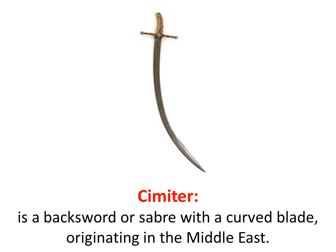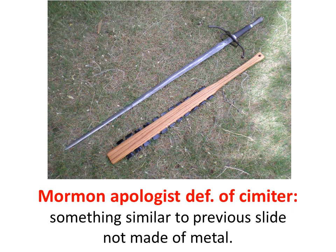A scimitar, which is mentioned in the Book of Mormon, is a backsword or saber with a curved blade originating in the Middle East. But since they did not have metal or these kinds of swords in Book of Mormon times, apologists give a different definition for scimitar — something similar to a scimitar, but not made of metal. So maybe one of those macanas again — wooden clubs with obsidian.